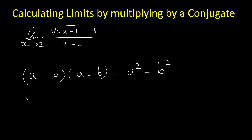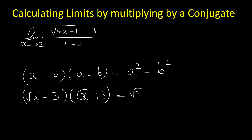For example, suppose we have radical x minus 3. The conjugate of radical x minus 3 is radical x plus 3. If we multiply them together the answer is radical x squared minus 3 squared. Radical x squared is x and 3 squared is 9. So by multiplying radical x minus 3 by radical x plus 3 we could get rid of the radical.